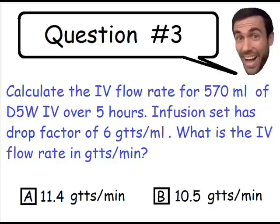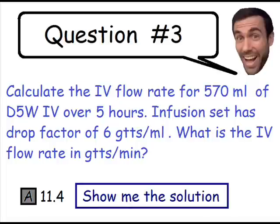Question number three: what is the flow rate in drops per minute? The correct answer is A, 11.4 drops per minute. Hopefully you answered this correctly, but no worries if you didn't — I have provided the solution if you need it. And now let's move on to question number four.